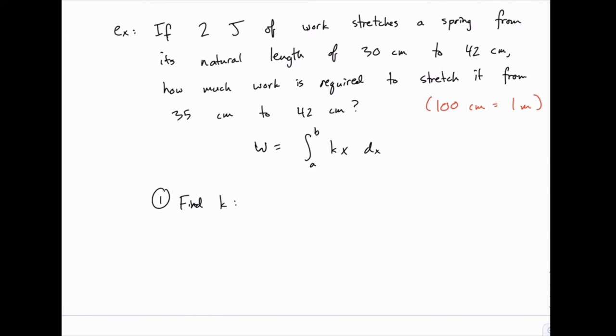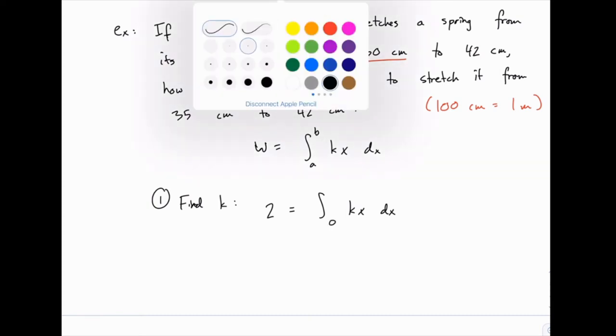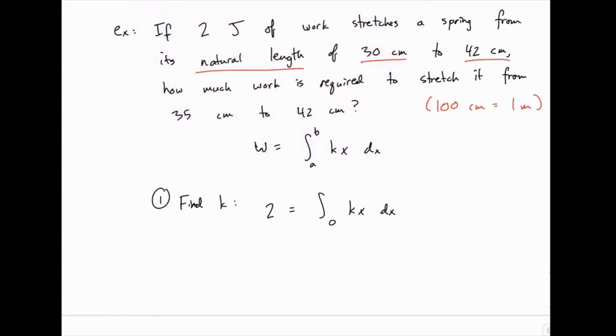So we'll set up this formula with 2 in the place of work, and then for the limits of integration, notice that it's stretching from its natural length of 30, so it's starting at x equals 0, because x represents the distance from the natural length. At the upper limit of 42 centimeters, it's been stretched from 30 to 42, so it's been stretched a total of 12 centimeters, which is 0.12 meters. We want to use standard units for these things so that everything is consistent.